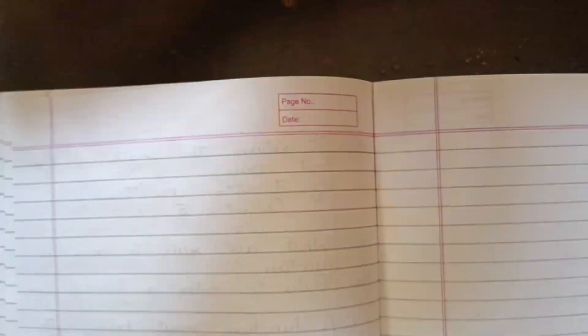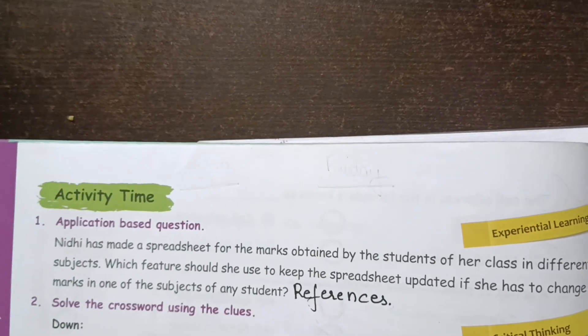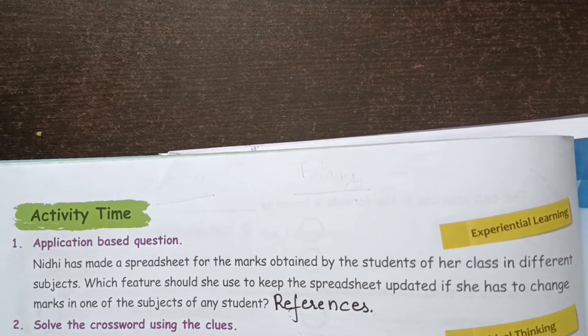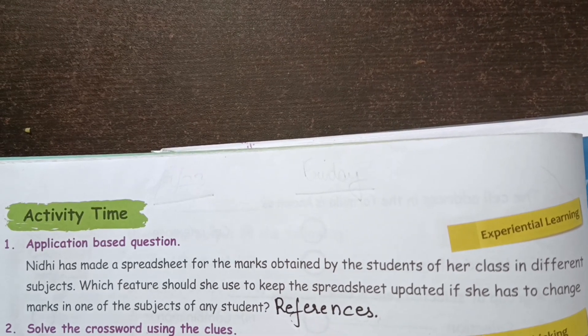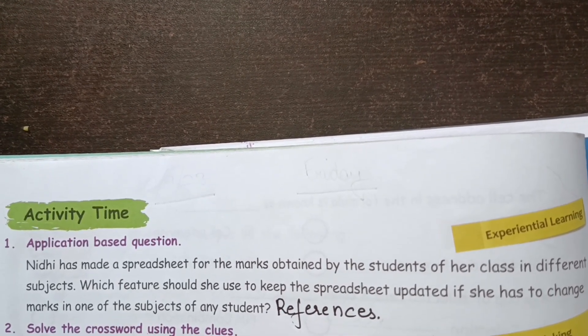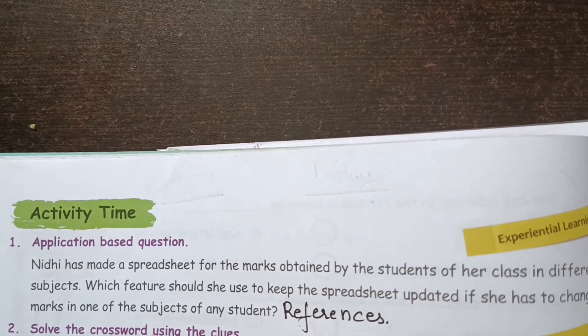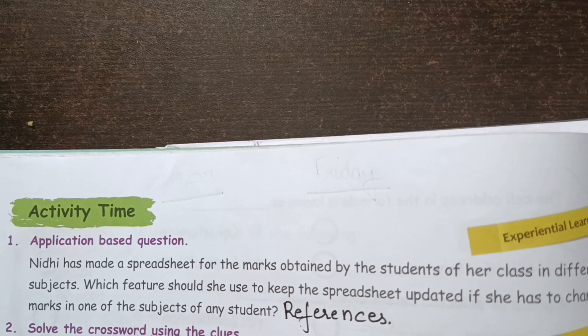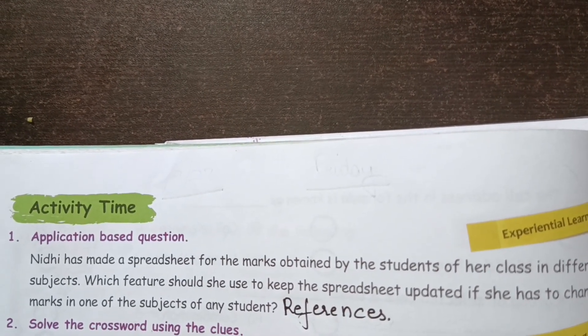Next, last question: Application based question. Nidhi has made a spreadsheet for the marks obtained by the students of her class in different subjects. Which feature should she use to keep the spreadsheet updated? So the answer is references. So this was all for this lesson, chapter number five, class six. If you find the video useful, please like and share.